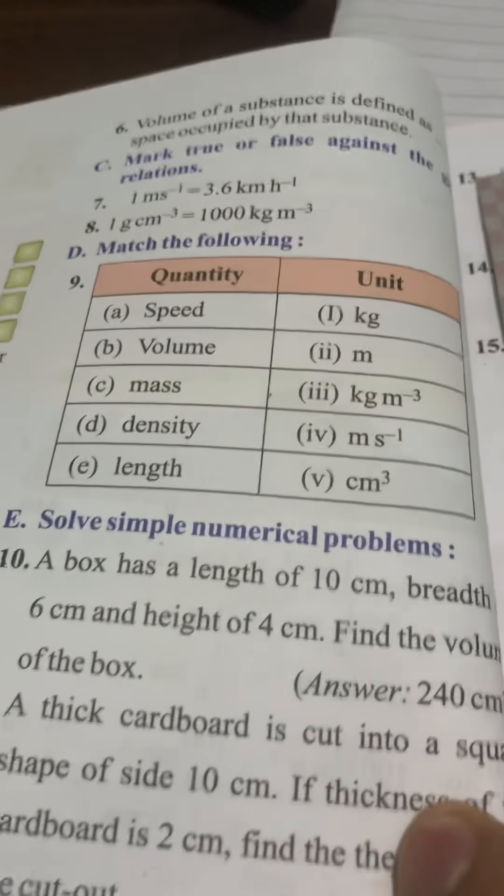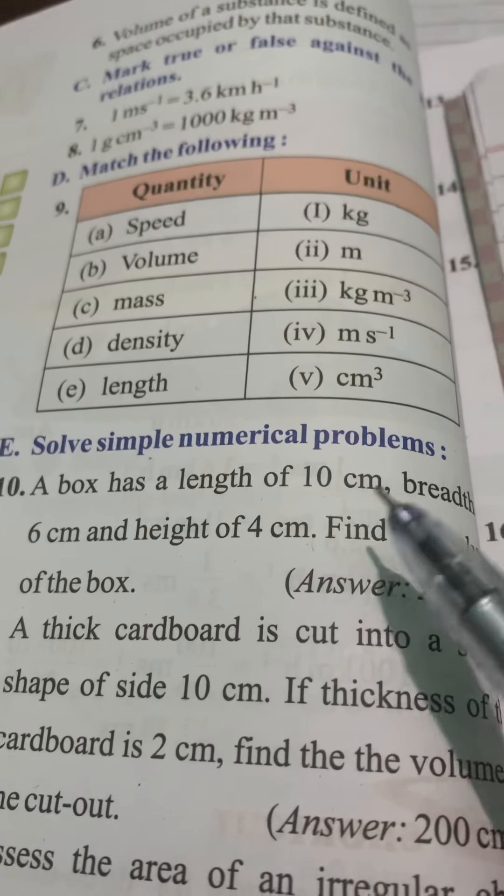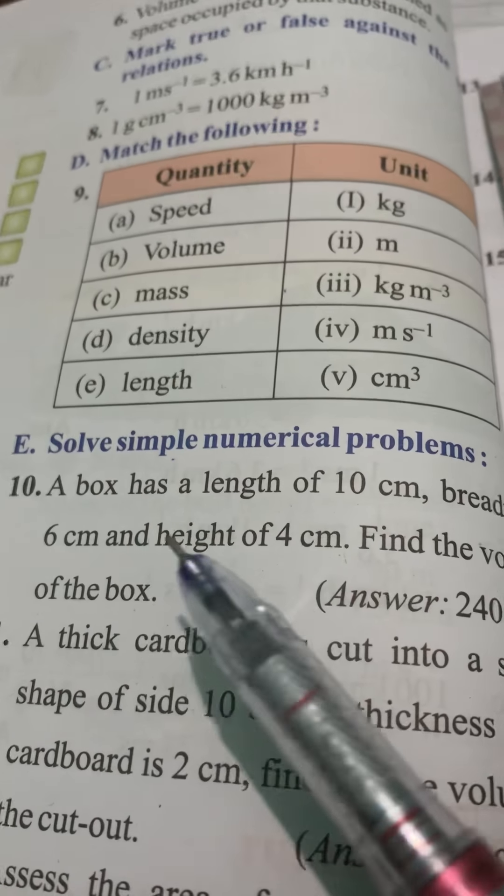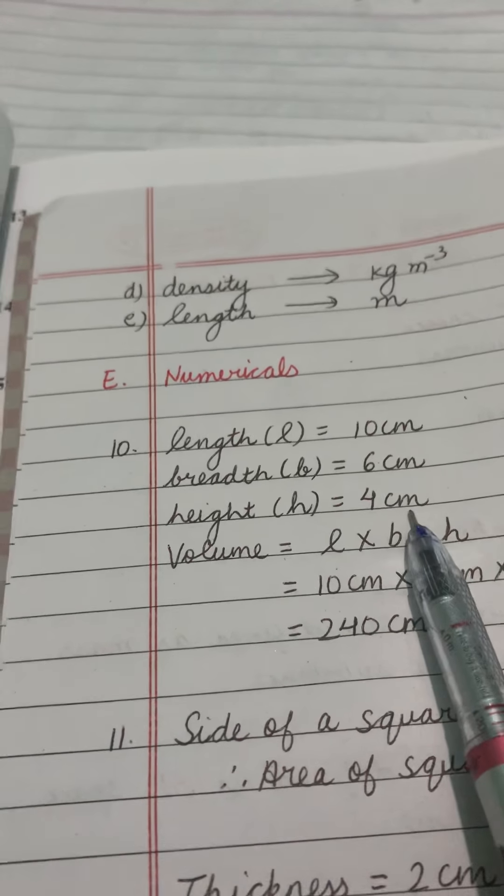Now let us start with the numericals. First numerical, a box has a length of 10 cm, breadth of 6 cm and height of 4 cm. Length is 10 cm, breadth is 6 cm and height is 4 cm.